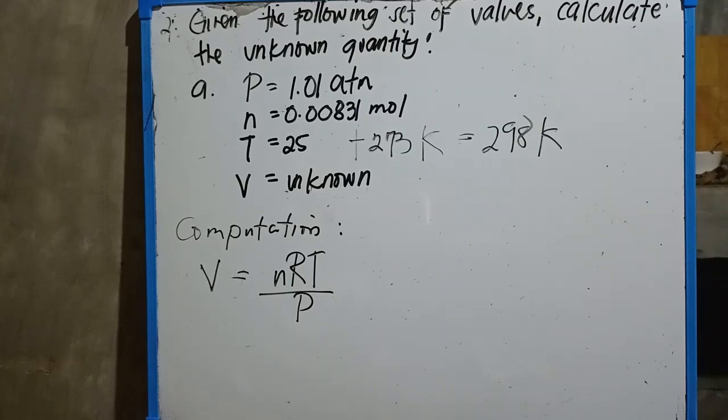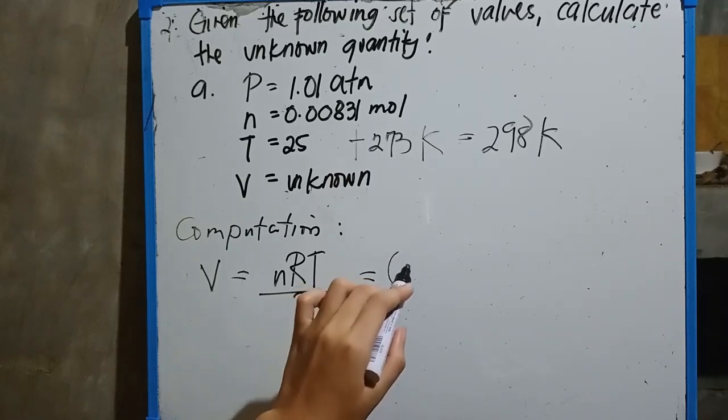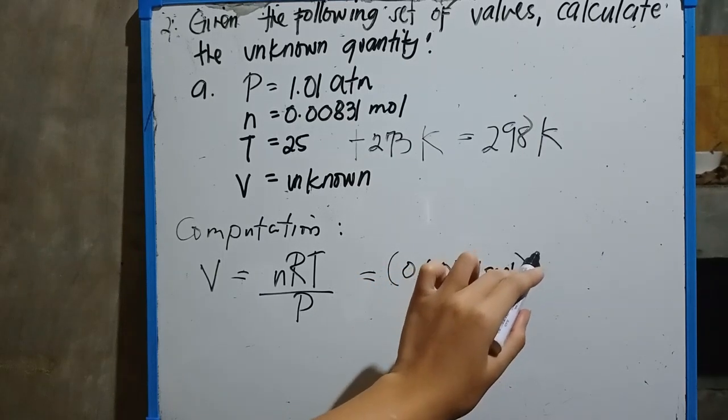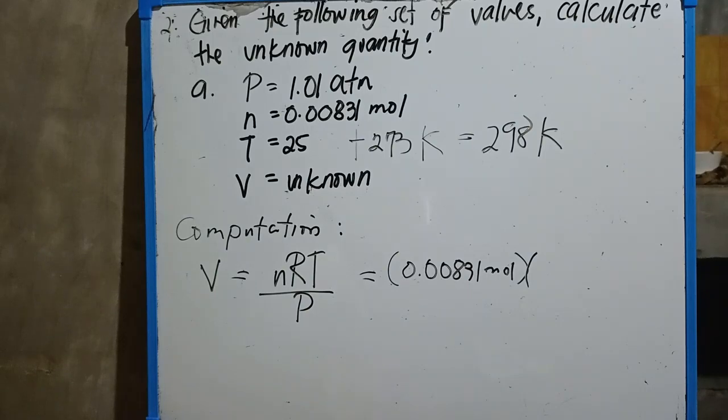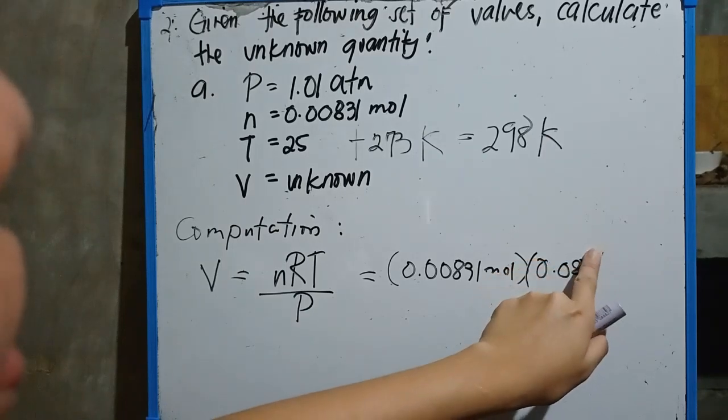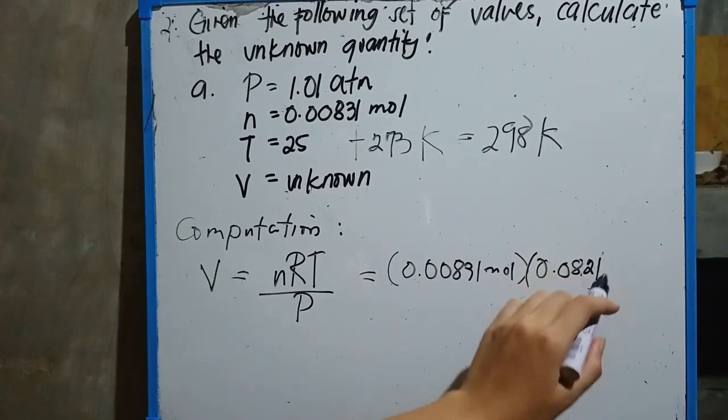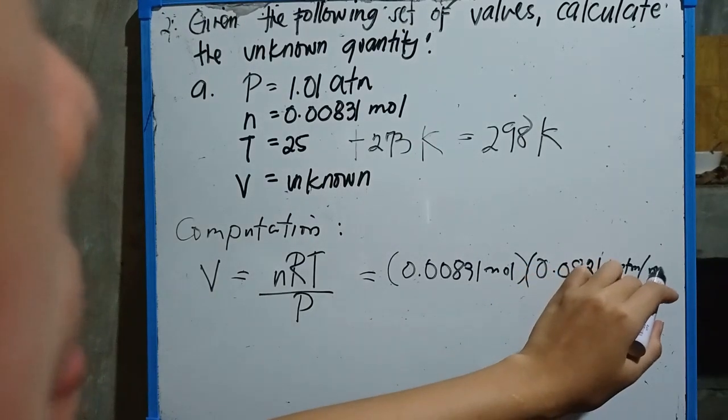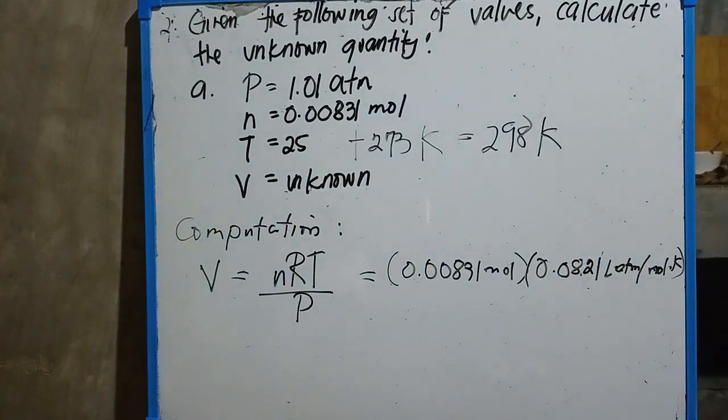So we can now write the value. 0.00831 mole, multiply to which is the constant unit of ideal gas, we have the 0.0821, then write the unit L·atm per mole·kelvin.